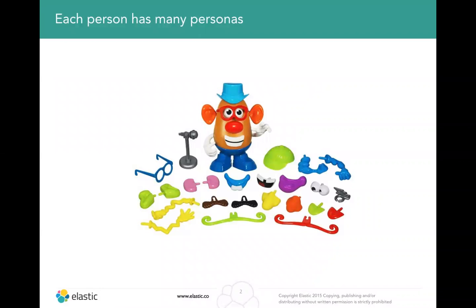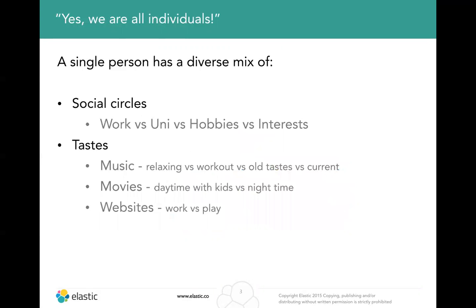Each person can generally be thought of as having many different personas — various different facets and aspects to individuals. We can think of people as having very different social circles: different groups of friends, which may be work-related, university, hobbies or interests, and equally the sorts of things they're interested in, their tastes in terms of music, movies, or websites.